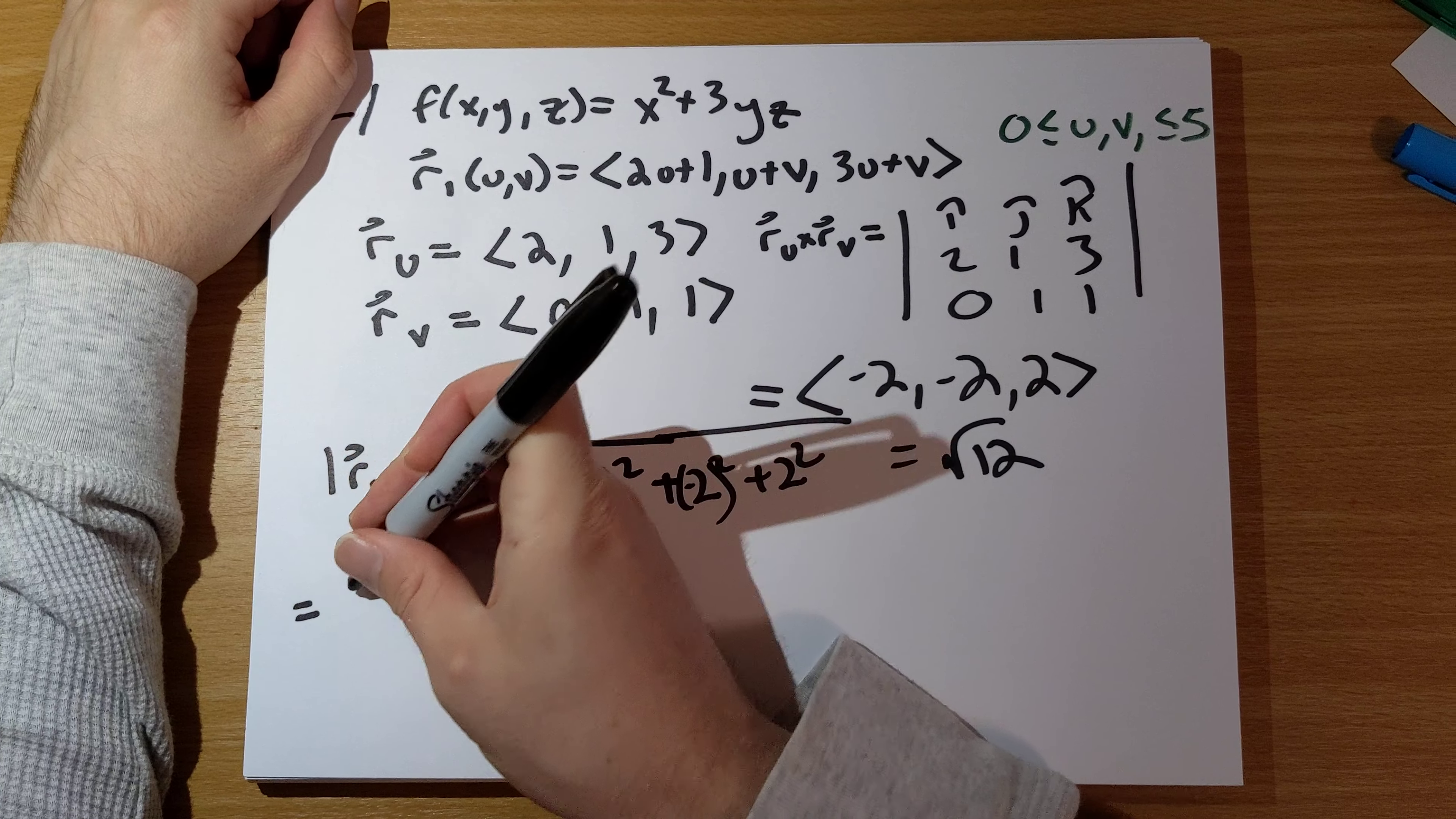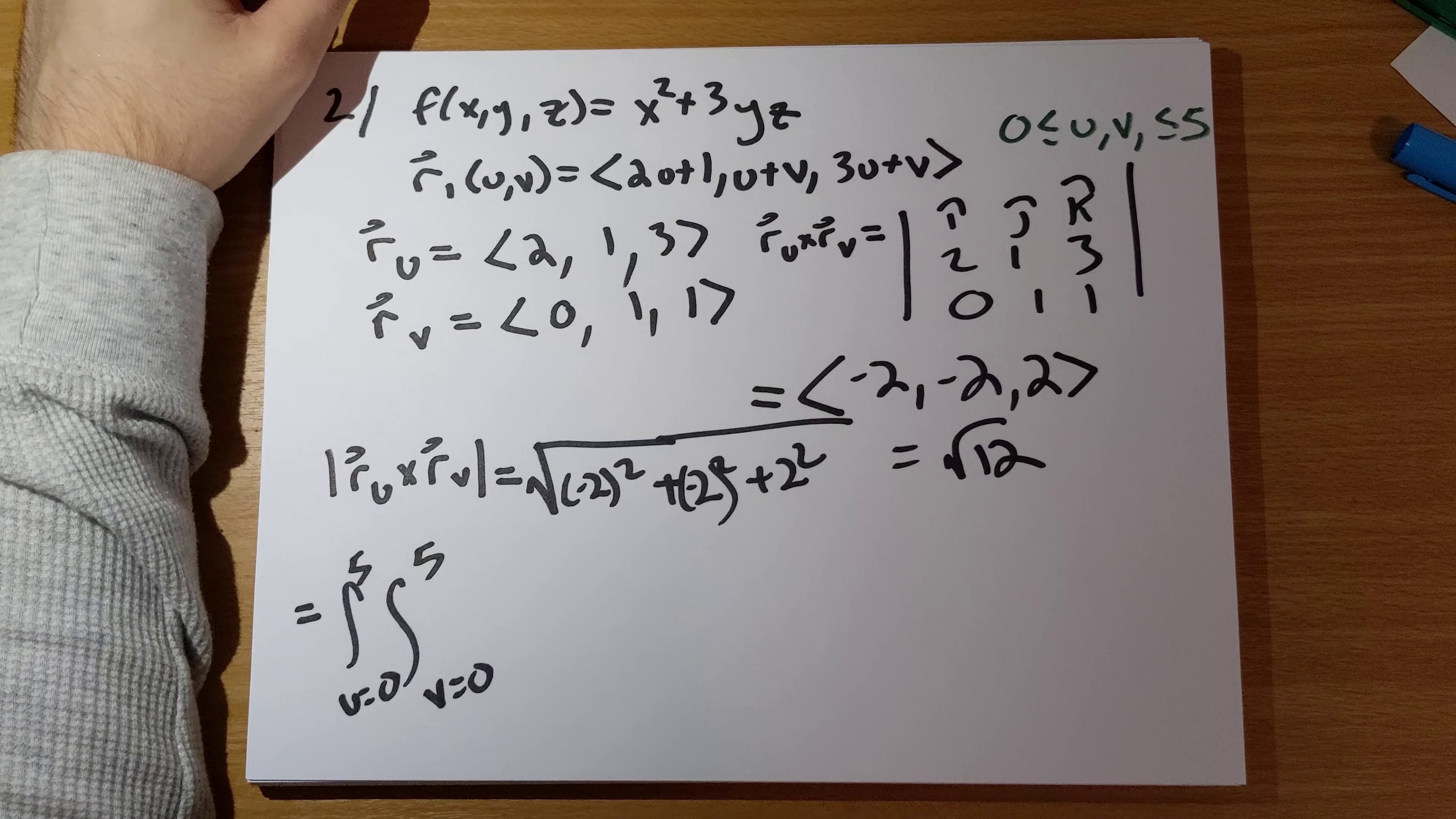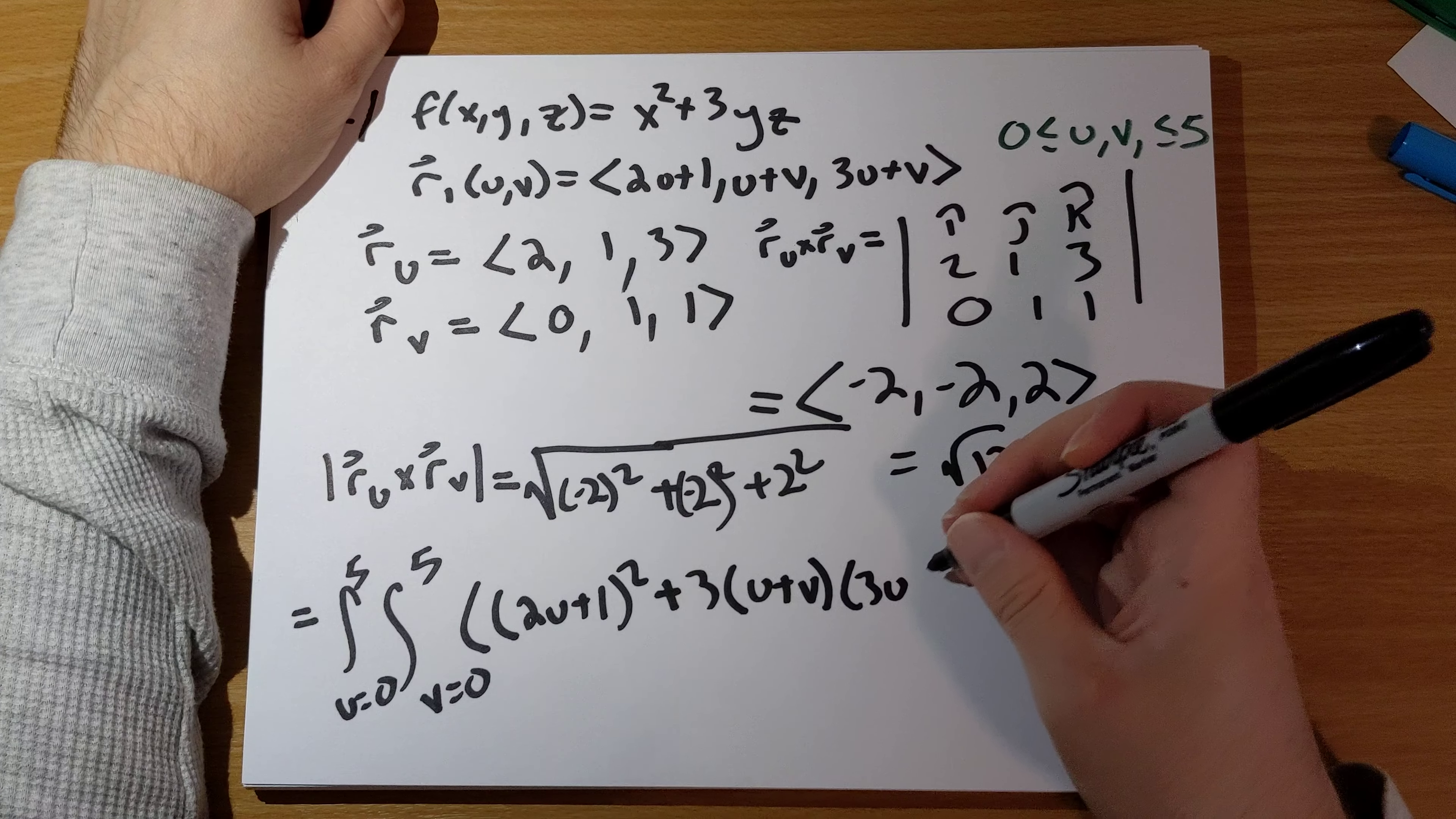And then, our integral is going to equal u runs from 0 to 5, v runs from 0 to 5, and we are going to integrate. We need to take our function in question here, x squared plus 3y, z, and substitute in x is 2u plus 1 squared, and then plus 3 times y is u plus v, and z is 3u plus v.